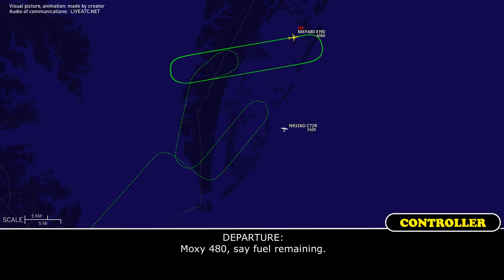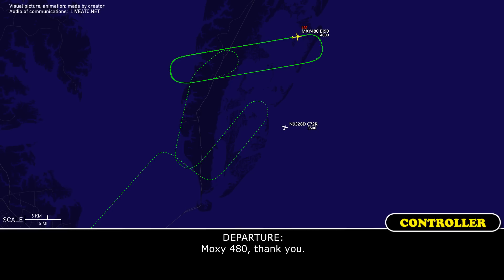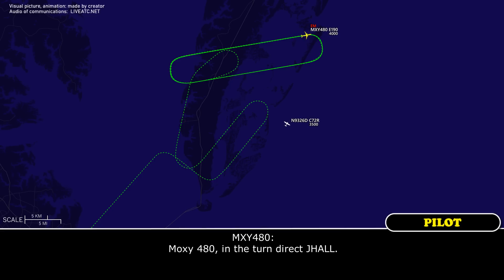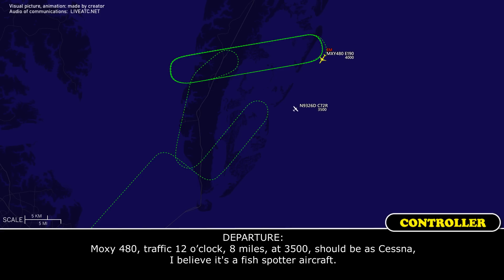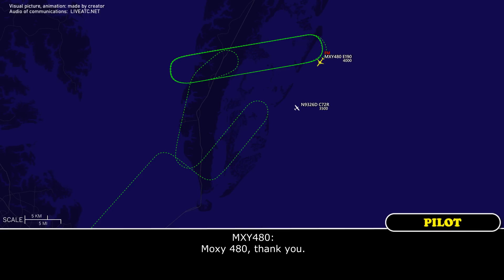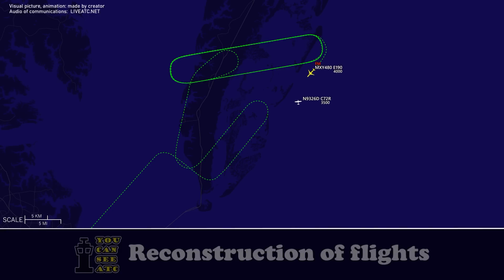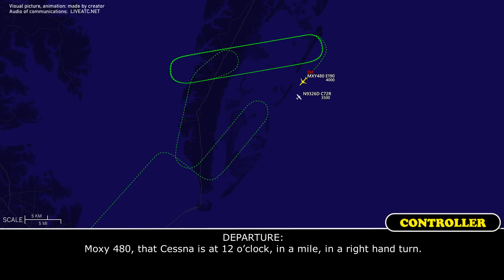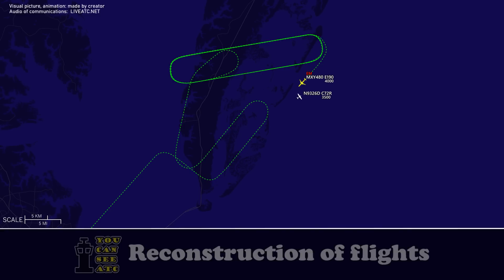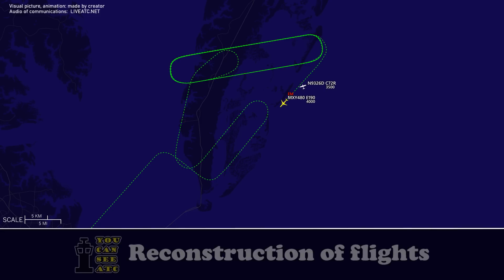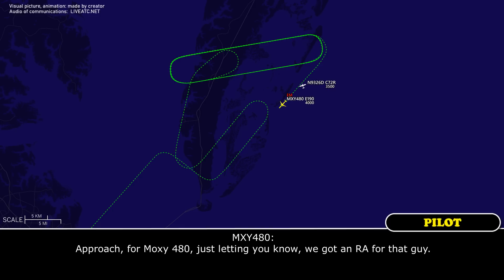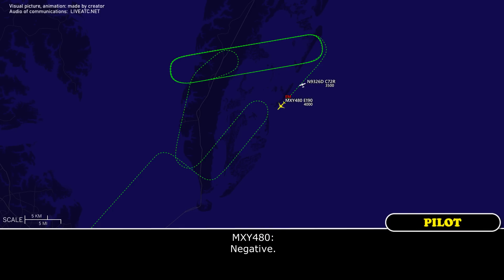MOCZ 480, state fuel remaining. We have 8,500 pounds on board. MOCZ 480, thank you. MOCZ 480 in the turn, direct J-Hall. MOCZ 480, traffic 12 o'clock, 8 miles, orbiting at 3,500 — believed to be a fish-spotter aircraft. MOCZ 480, that traffic is 12 o'clock, 8 miles on our right-hand turn. We got a visual. MOCZ 480, we got a TCAS RA for that traffic. MOCZ 480, roger. Did you need to maneuver at all? Negative. Roger.